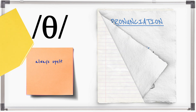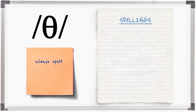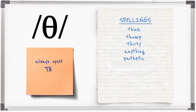TH is always spelt TH. Examples: think, thump, thirty, anything, pathetic, athlete, bath, worth, teeth, thirtieth.